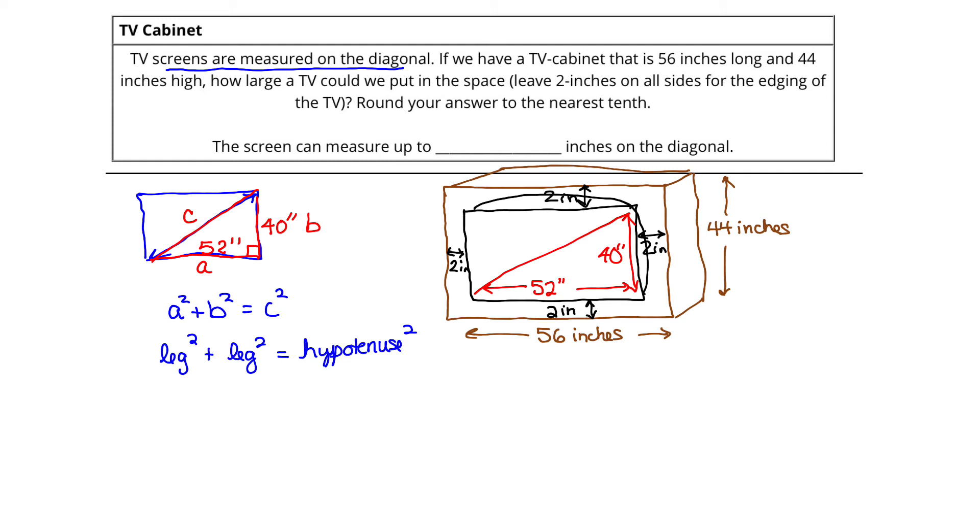So plugging that bit of information into the Pythagorean formula, we get that 52 inches or 52 squared plus 40 inches or 40 squared equals C squared, where C is just that diagonal that we're looking for. Whip out a calculator or go to Desmos, your phone, any kind of scientific calculator. And let's calculate 52 squared. Remember, 52 squared is just 52 times 52, so you should get 2,704. And 40 squared is just 40 times 40, which is 1,600. Adding those two numbers together, we have 1,600 plus 2,704, and that's going to give us that C squared is equal to 4,304.